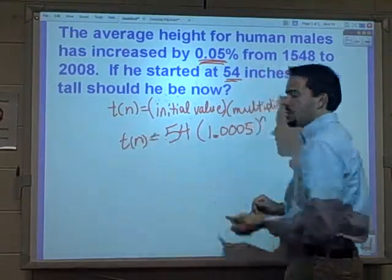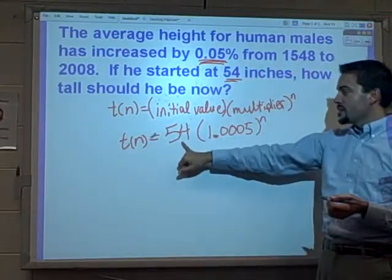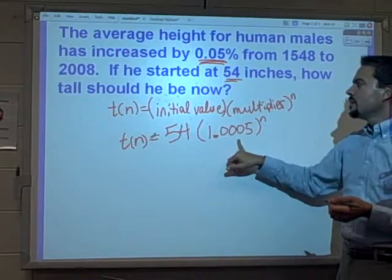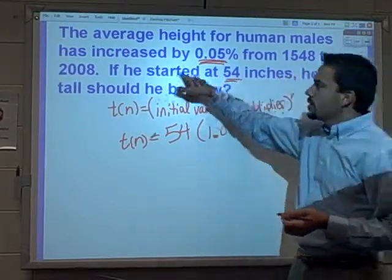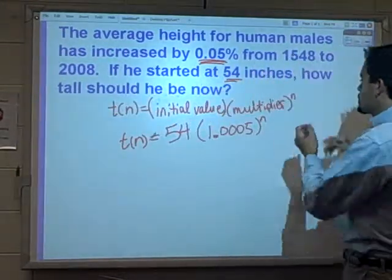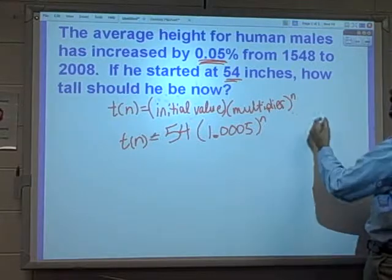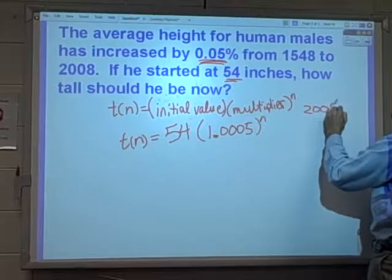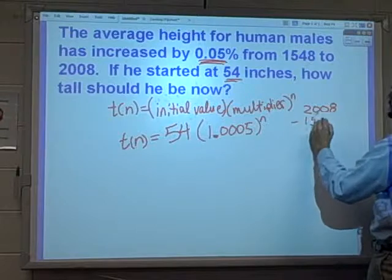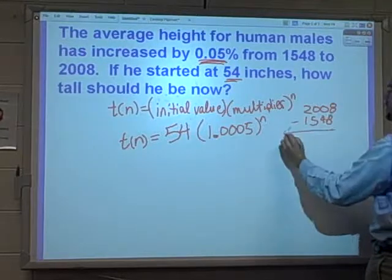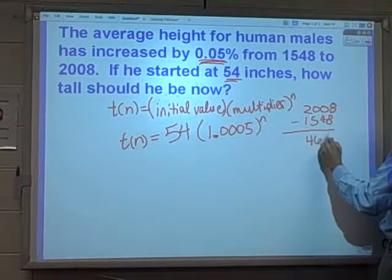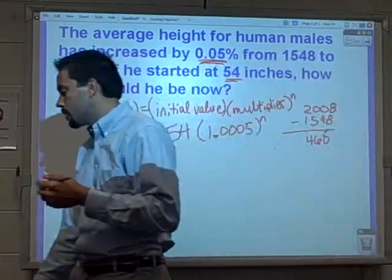So that's what our equation is going to look like, the starting height times the multiplier. Now if we want to look at 2008, which is right now, first of all we're going to figure out what n value did we have. We've got 2008 minus the 1548. We should be left with 460 years of evolution.